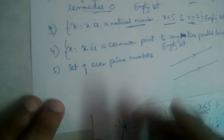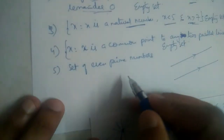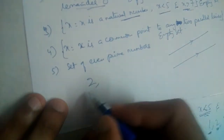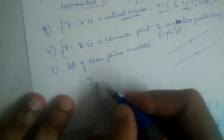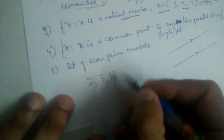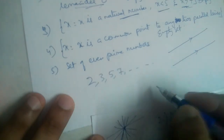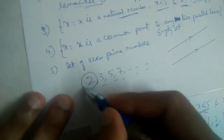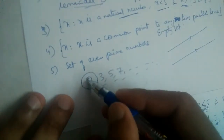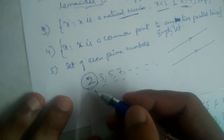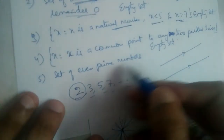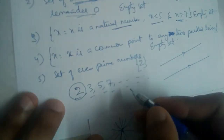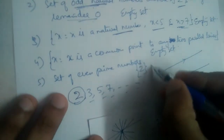Fifth one: set of even prime numbers. Let us write a few prime numbers — they start from 2, 3, 5, 7, and so on. All other prime numbers will be odd; there is only one even prime number, which is 2. So the set of even prime numbers contains 2. Is this an empty set? No, it is not an empty set.